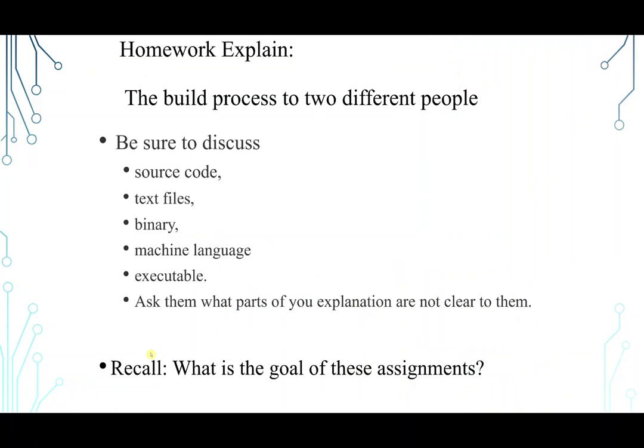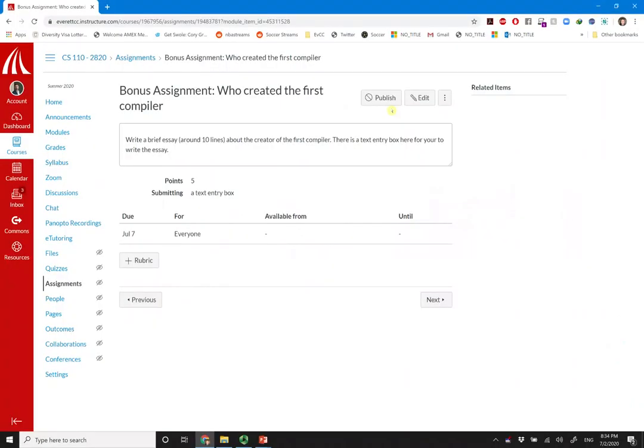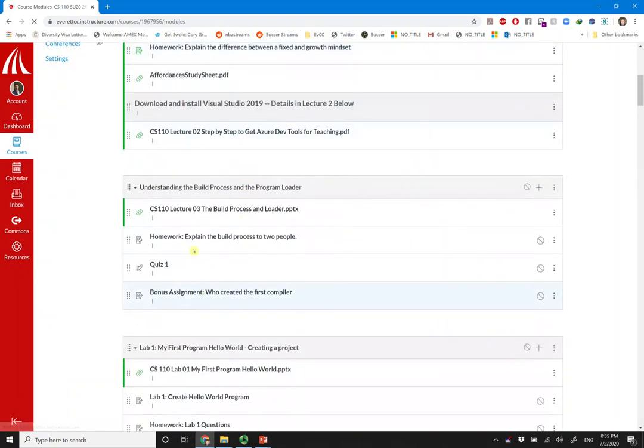Okay, here's the homework for you. Explain the build process to two different people. So be sure to discuss source code, syntax, text files, binary, machine language, executable, and all these things you have learned today. To two different people. Ask them what parts of your explanation that weren't clear enough for them. And ask them to write you. So when you do that, do that in Canvas. Go to modules. And in modules, you are going to see this assignment page. Explain the build process to two people.